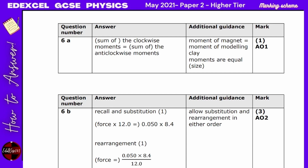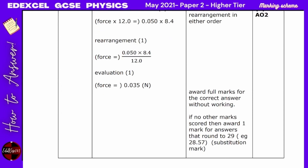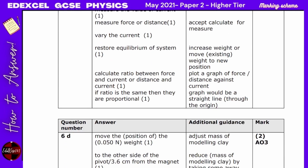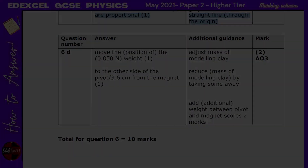For the marking scheme on Question 6: stated as sum of clockwise equals anticlockwise moments. The force was 0.035 N. For the investigation: measure the value of current, measure force or distance, vary the current, restore equilibrium, calculate the ratio, or plot a force-versus-current graph — a straight line through the origin confirms direct proportionality. For Q6d — move the weight to the other side of the pivot.